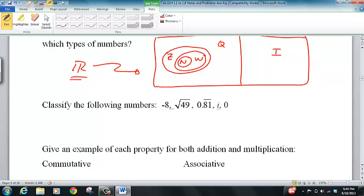For negative eight, we would say this is an integer and then everything above it: rational and real. Square root of 49 works out quite nicely as seven, so that's everything - it's a natural number, whole number, integer, rational number, and real.